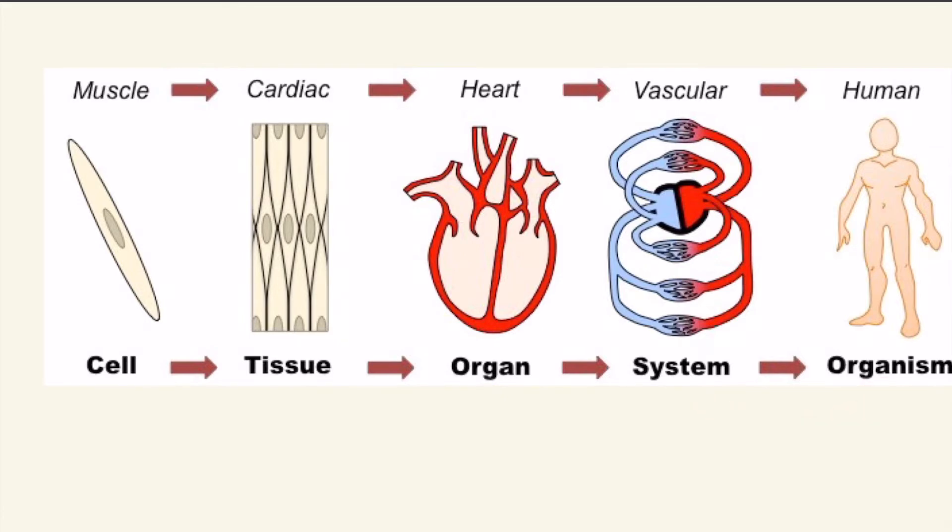In this particular scenario, we can focus on a muscle cell, and the muscle cell goes into cardiac tissue, and the cardiac tissue makes up a heart, which is comprised of different arteries and veins, and the heart is part of the vascular system, and the vascular system is only one system in the human. However, these particular parts do not function by themselves. They function together to make up an organism, which is a human in this case.